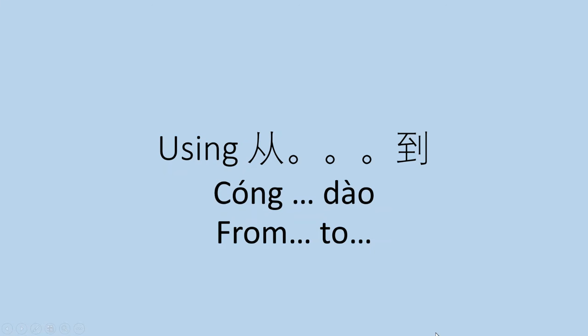One of the sentence patterns you need to know for lesson 19 is using the words from time to second time, or from place one to place two. And to say that in Chinese, we use 从 for from and 到 for to. 从 with this C is pronounced T-S: 从, 从到.